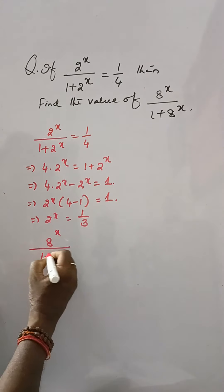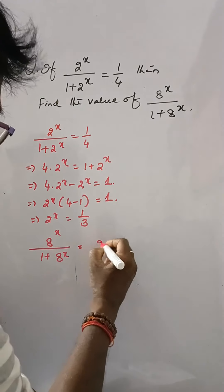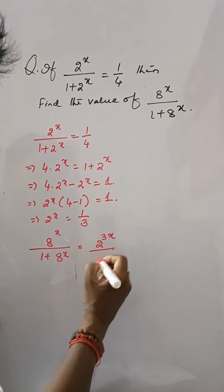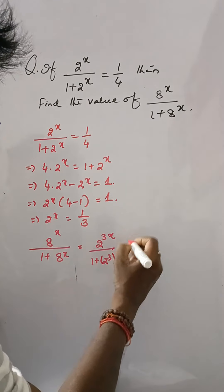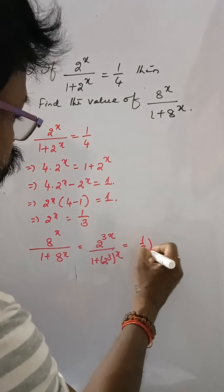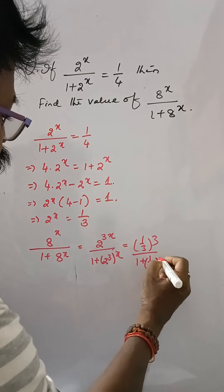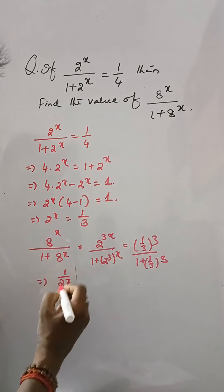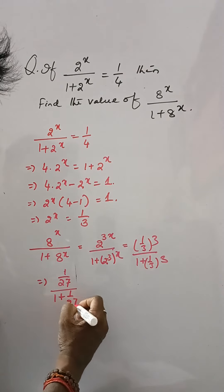Now we have 8 to the power x divided by 1 plus 8 to the power x, which equals 2 to the power 3x divided by 1 plus 2 to the power 3x. Substituting 2 to the power x equals 1 third, we get 1 third cubed by 1 plus 1 third cubed, which is 1 by 27 divided by 1 plus 1 by 27.